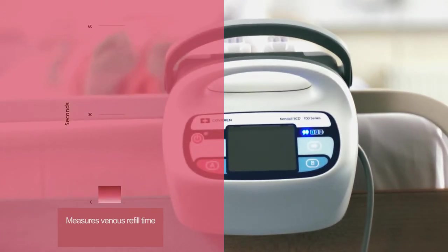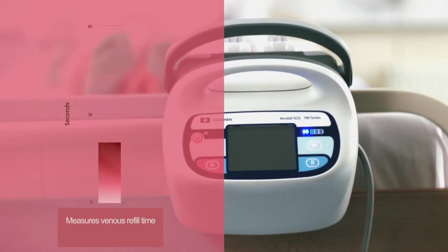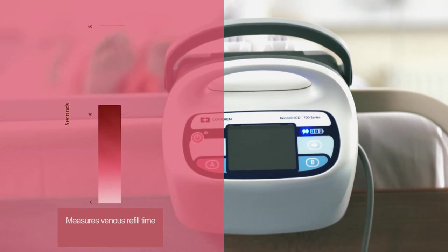VRD works by measuring the time it takes for a patient's veins to refill with blood after being compressed, and then setting the frequency of compression cycles on the patient's specific venous refill time, anywhere between 20 and 60 seconds.